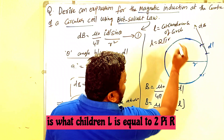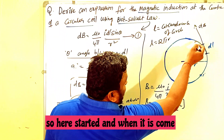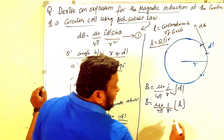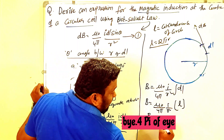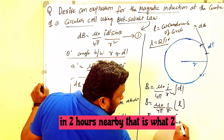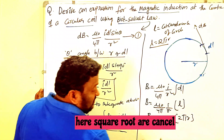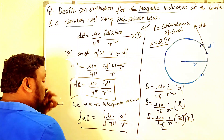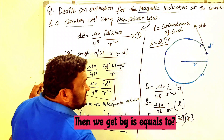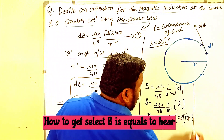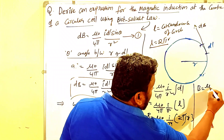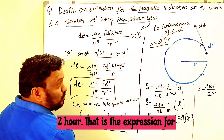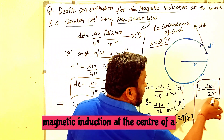The circumference of the circle is l = 2πr. Substituting this, B = (μ₀/4π) × (I/r²) × 2πr. Simplifying — r cancels with one r, and 2π cancels with 4π leaving 2 — we get B = μ₀I / 2r. This is the expression for magnetic induction at the center of the circular coil.